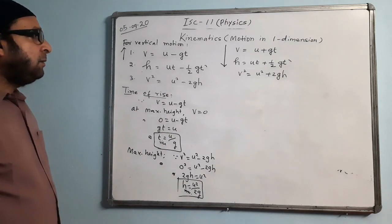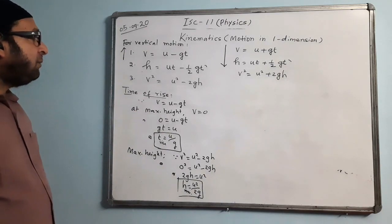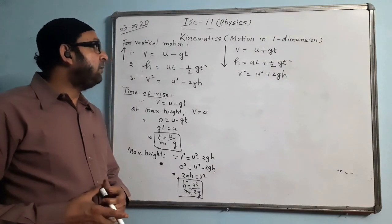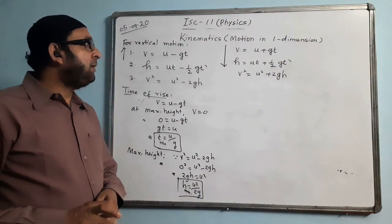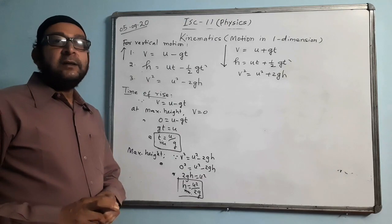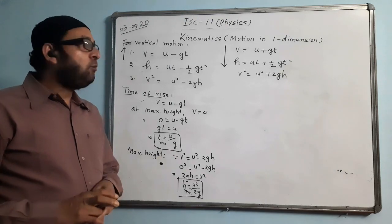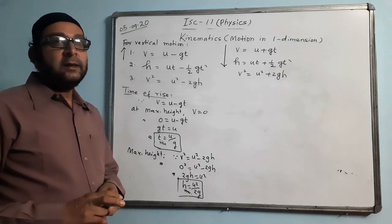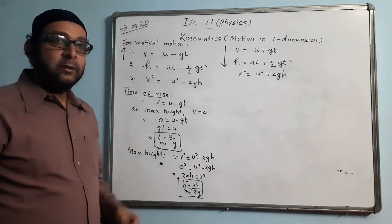So today we have covered all 5 formula derivations and the vertical motion modifications. Tomorrow we will prove that time of rise and time of fall are equal, do some problems, and with that the chapter will be over.